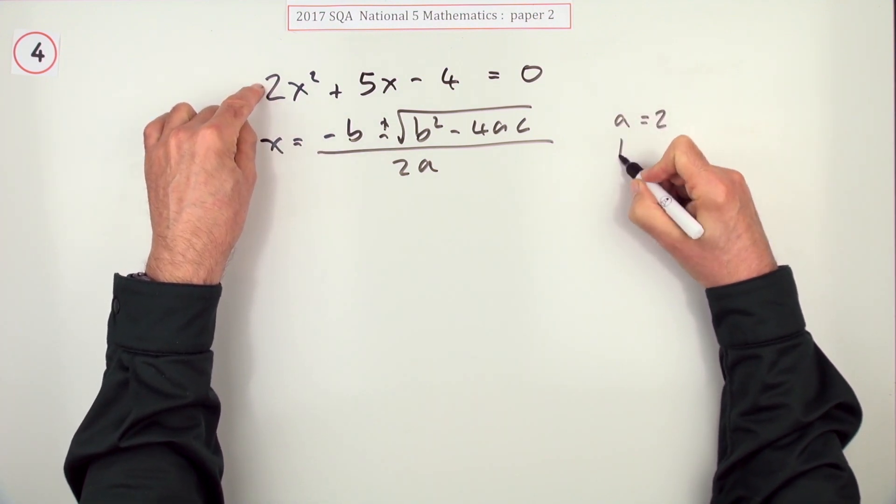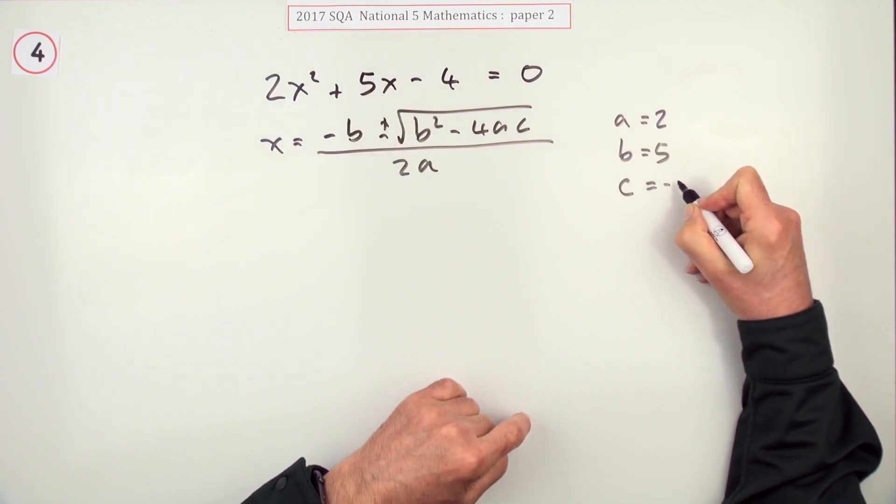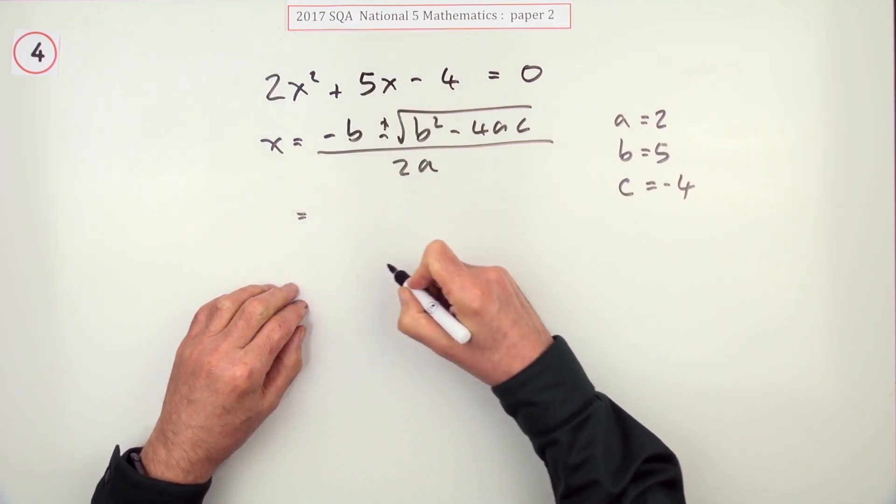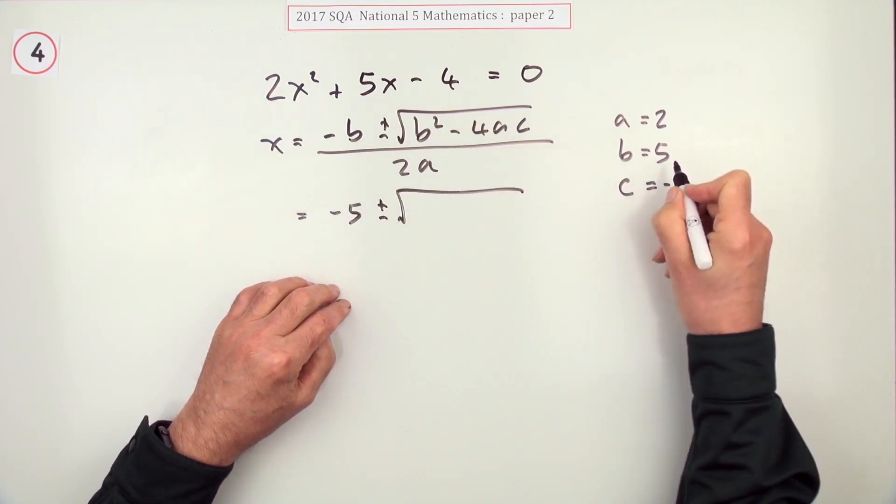a is definitely 2, b is definitely in front of the x, that's 5, and c is negative, so c is -4. Pop that in. The negative of b, so that's negative 5. b squared...